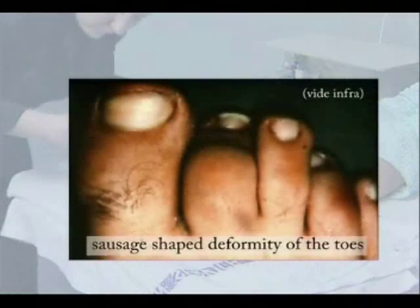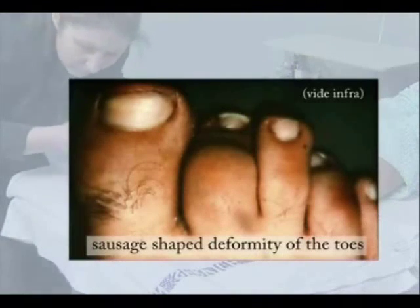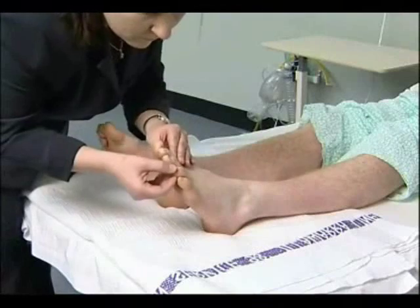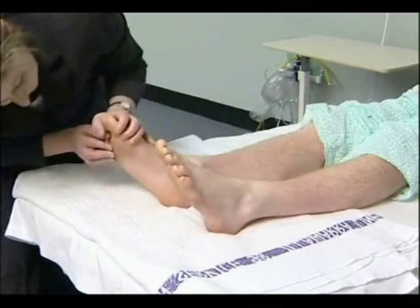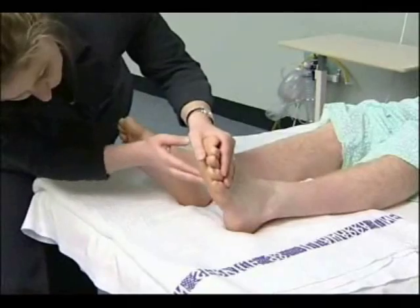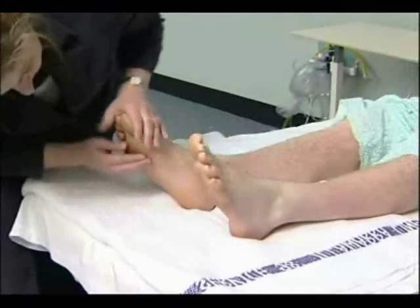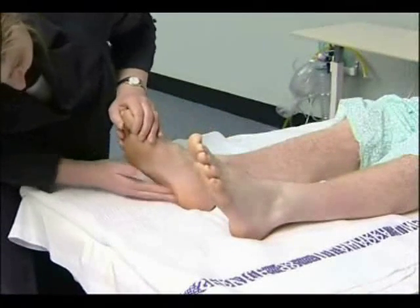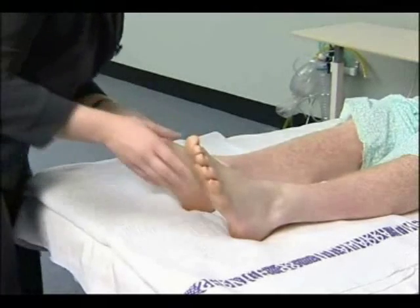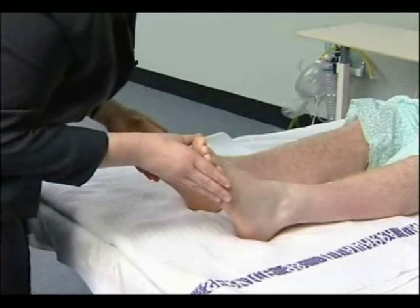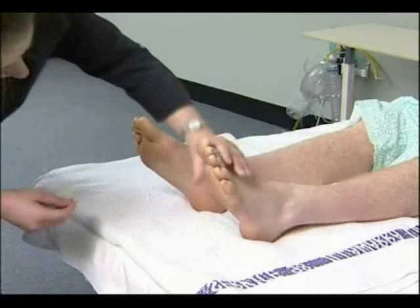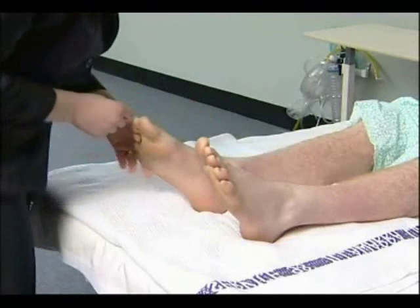Look for the nail changes that suggest psoriasis. Inspect the transverse arch of the foot, which runs underneath the metatarsophalangeal joints, and the longitudinal arch, which runs from the first metatarsophalangeal joint to the heel, for flattening.